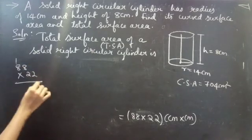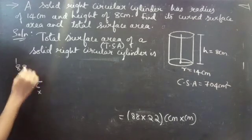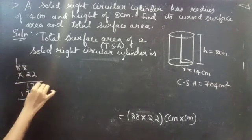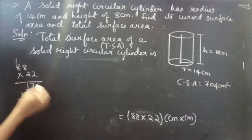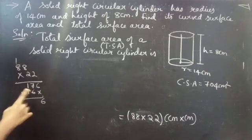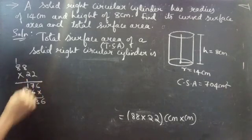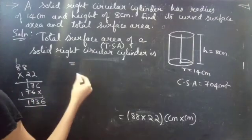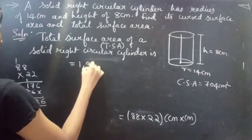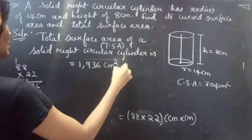Multiplying 88 into 22: 8 twos are 16, carry 1; 8 eights are 64 plus 1 is 65 — giving 176. Then 2 twos are 4 carry nothing; 2 eights are 16; giving 176. Adding: 6 plus 6 is 12 carry 1; 7 plus 7 plus 1 is 15 carry 1; 1 plus 1 is 2, then 1. Result is 1936 centimeter square.